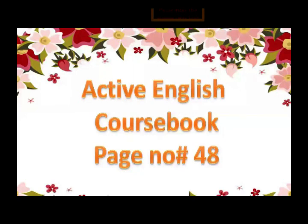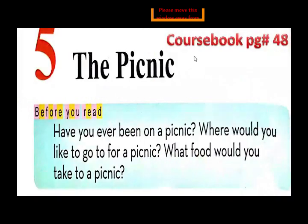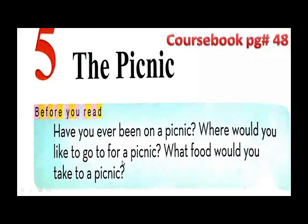Now let's come to our unit. It's in your Active English course book, page number 48. I request all of you to open your books to page number 48. Our unit is unit number five — 'The Picnic.' Before you read, there are pre-reading questions: have you ever been on a picnic? Where would you like to go for a picnic? What food would you like to take?